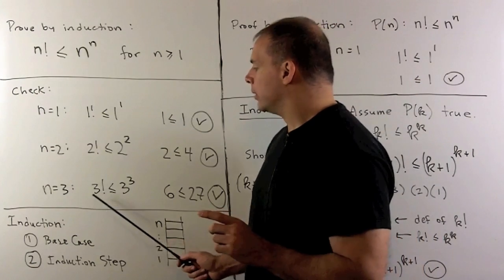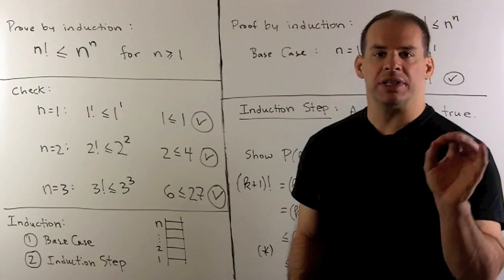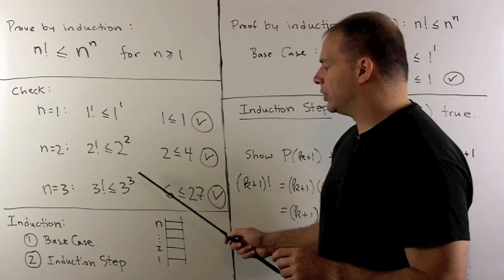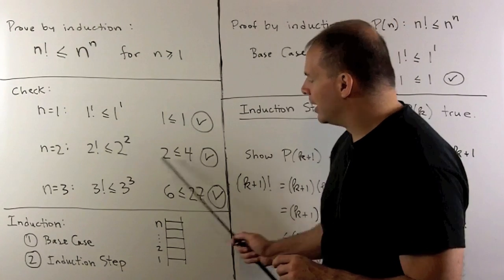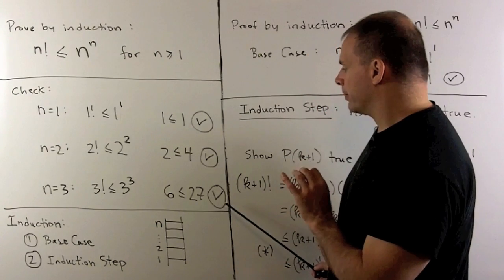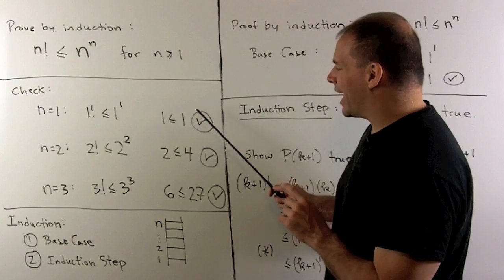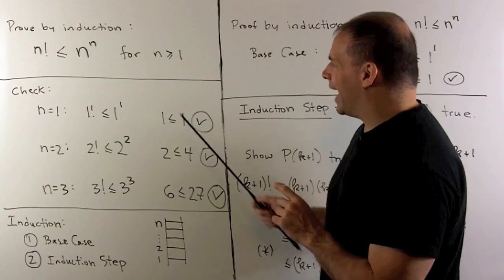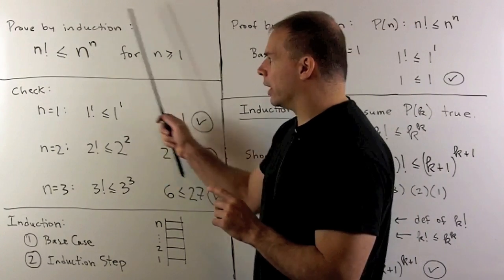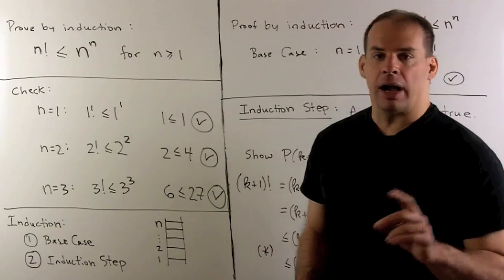One more. We have 3 factorial, 3 times 2 times 1, less than or equal to 3 cubed, which is 27. And again, that holds. Okay, what we'll see is, as n gets larger, n to the n is going to pull away very quickly.